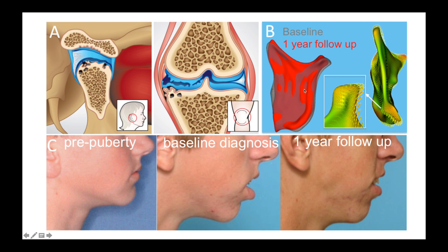At baseline, the patient already presents oftentimes with condylar flattening, and in the one-year follow-up that we will be doing in this project, we often see continuation and progression of those changes that happen in certain areas of the condyles. We will assess both the location and the magnitude of those changes in the one-year follow-up.